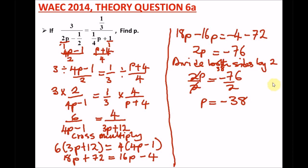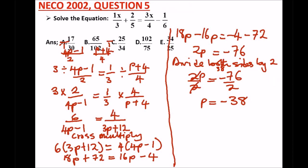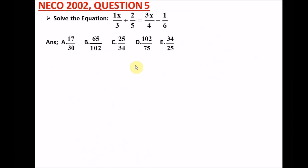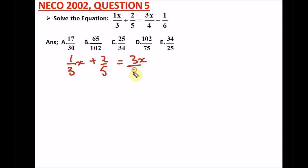That's our first question. Let's clear the screen and go to our next question. From NECO 2002, question five: solve the equation. We have one over 3x plus two over five equal to 3x over four minus one over six. All we need to do is find the LCM of these denominators.